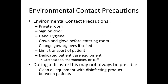Environmental contact precautions consist of placing the patient in a private room and posting a sign that these precautions are in use. Hand hygiene should be performed prior to entering the room, as well as donning a gown and gloves. The gown and gloves should be changed if they become soiled. Transport of the patient should be limited, and there should be dedicated patient care equipment such as a stethoscope, thermometer, and blood pressure cuff. During a disaster this may not always be possible; if so, make sure all equipment is cleaned and disinfected between patients.